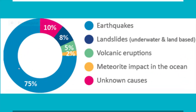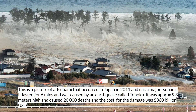This is a diagram where the blue area shows earthquakes, and this is the major cause for tsunamis. This is a picture of a tsunami that occurred in Japan in 2011 and it's a major tsunami. It lasted for 6 minutes and was caused by an earthquake called Tohoku. It was approximately 9.3 meters high and caused 20,000 deaths, and the cost for the damage was 360 billion US dollars.